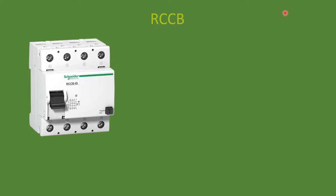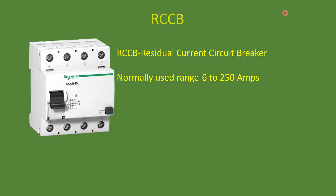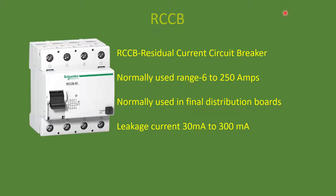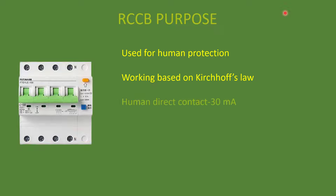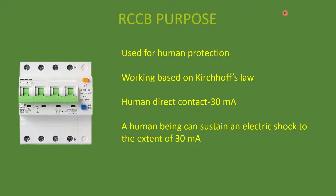Another type of circuit breaker commonly used is RCCB — the full form is Residual Current Circuit Breaker. Normally it is used in the operating current range of 6 to 60 amps. We can find this in the final distribution board inside our home. It can trip from leakage currents starting from 30mA to 300mA. If human direct contact is involved, an RCCB with a 30mA leakage current rating is used. The purpose of RCCB is human protection against electric shocks — a human body can withstand electric shock up to 30mA; above that it can be fatal.